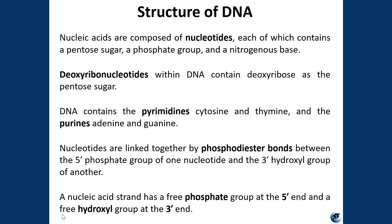The building blocks of nucleic acids are nucleotides, each of which contains a pentose sugar, a phosphate group, and a nitrogenous base. Deoxyribonucleotides within DNA contain deoxyribose as the pentose sugar, and DNA contains the pyrimidines cytosine and thymine, and the purines adenine and guanine. Nucleotides are linked together by phosphodiester bonds between the 5' phosphate group of one nucleotide and the 3' hydroxyl group of another nucleotide.